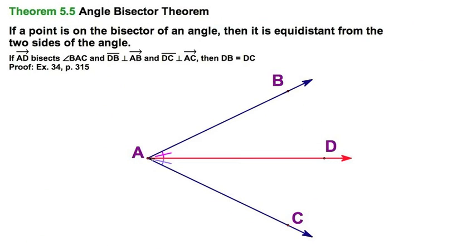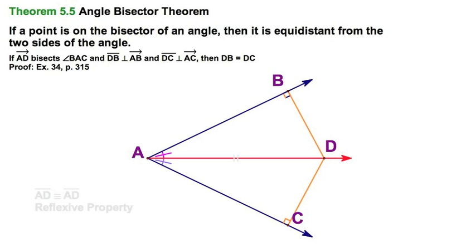Let's look at the theorem a little more. Starting here with angle BAC and this red angle bisector, the theorem says a point on it — in this case D — is equidistant from the two rays AC and AB. These orange segments represent the perpendicular distance to the rays, so the right angle is down there. We know AD is congruent to itself by the reflexive property.